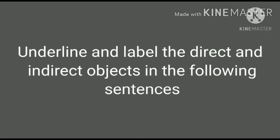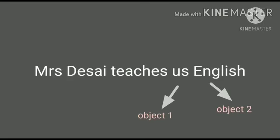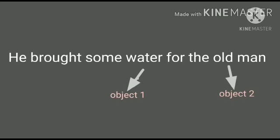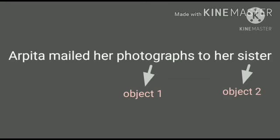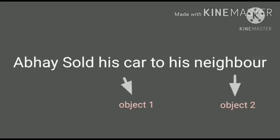Now underline and label the direct and indirect objects in the following sentences. Mrs. Desai teaches us English - 'English' object 1, 'us' object 2. He brought some water for the old man - 'water' object 1, 'old man' object 2. She paid 50 rupees to the shopkeeper. Arpita mailed her photographs to her sister - 'photographs' object 1, 'to her sister' object 2. Abhay sold his car to his neighbor - 'car' object 1, 'neighbor' object 2.